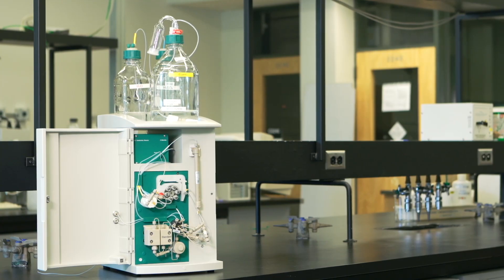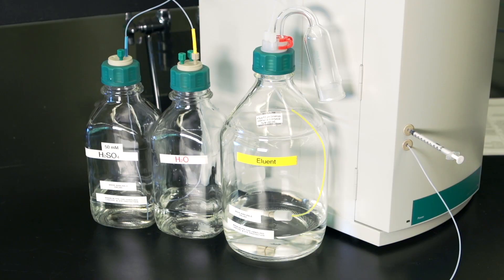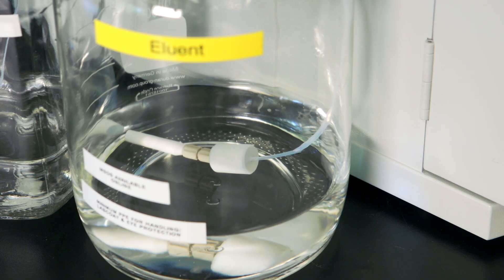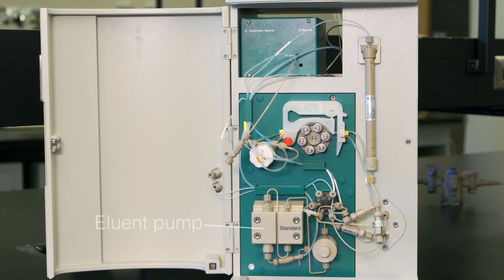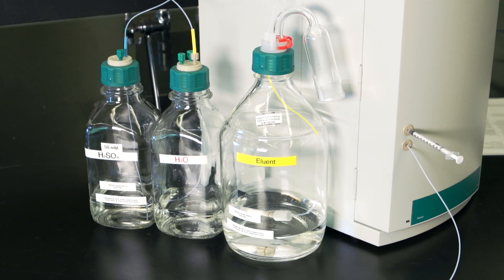We'll first start off with the mobile phase, otherwise known as the eluent. The eluent we use is a carbonate-bicarbonate buffer. It's carried throughout the instrument using a pump. A carbonate-bicarbonate buffer is used because it gives pH control and the total ionic strength can be easily modified.